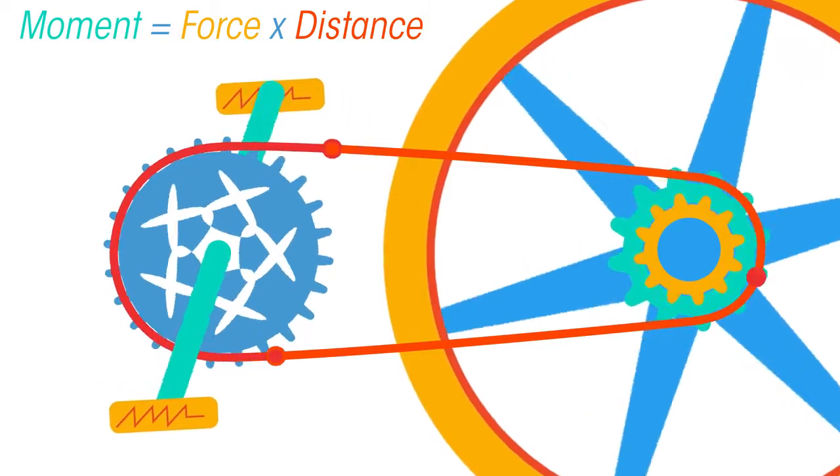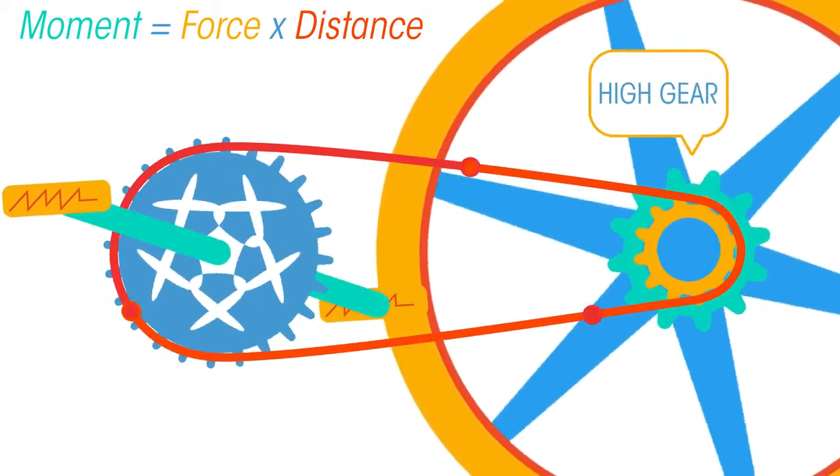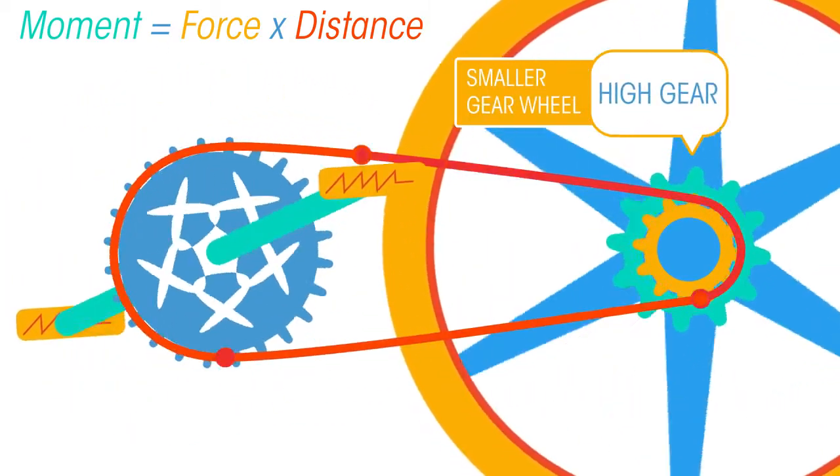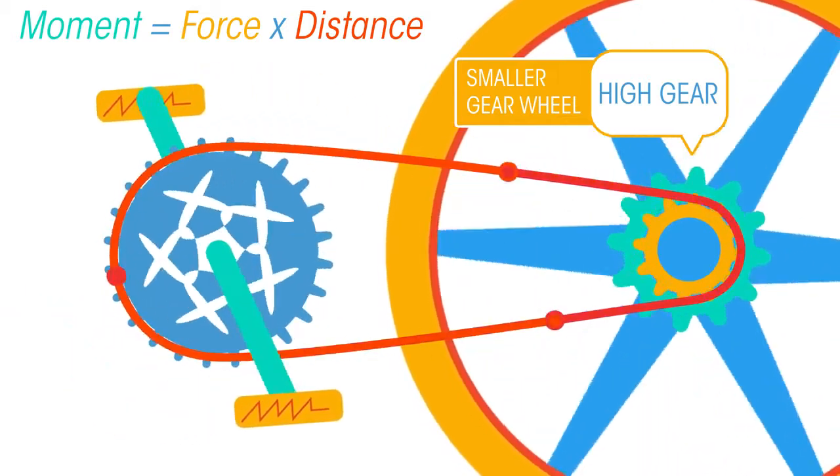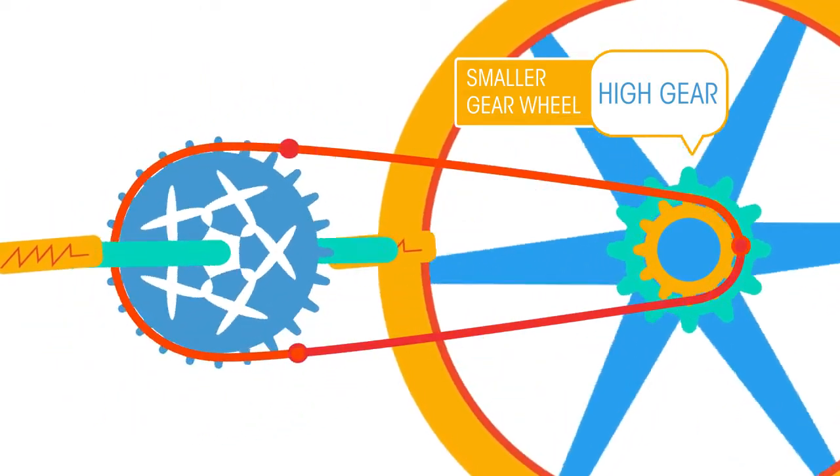Whereas to go quickly, you select a higher gear, which is a smaller gear wheel. Your force gives a smaller moment, but turns the wheel much more quickly.